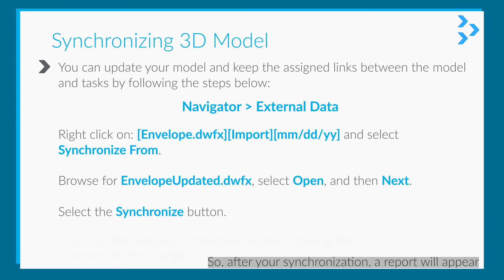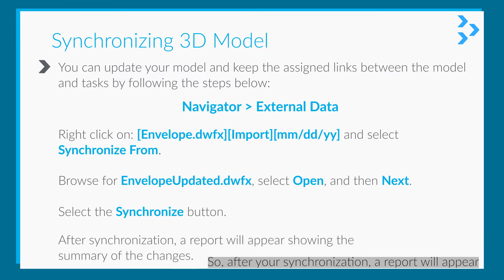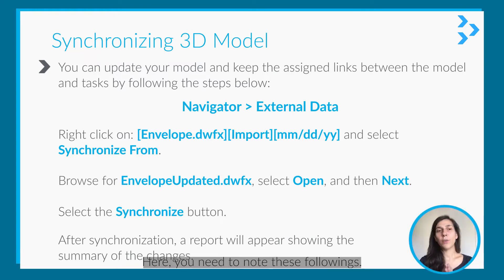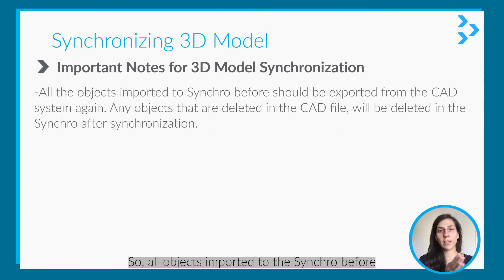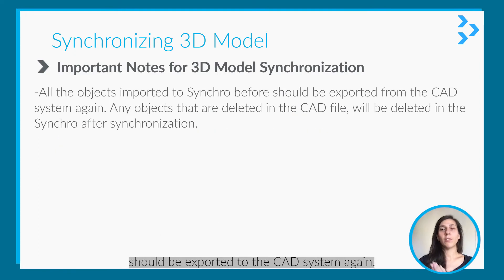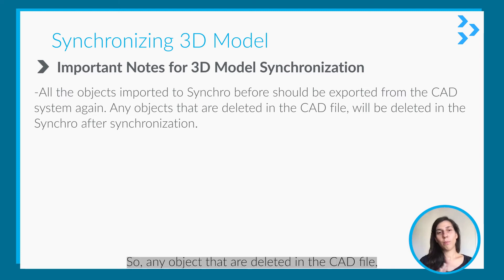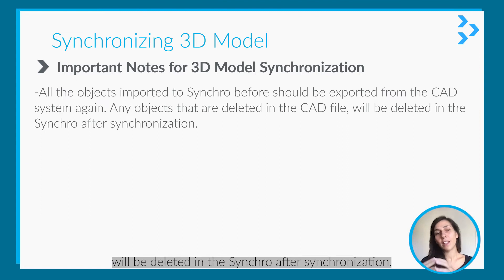After synchronization, a report will appear showing a summary of all changes. Note the following: all objects imported into Synchro before should be exported to the CAT system again, and any objects deleted in the CAT file will also be deleted in Synchro after synchronization.